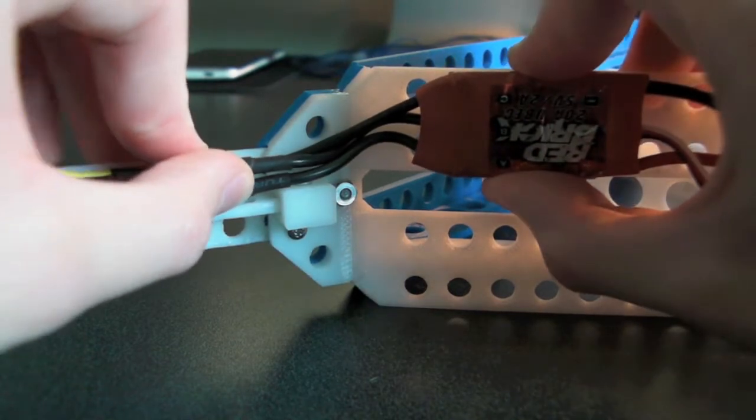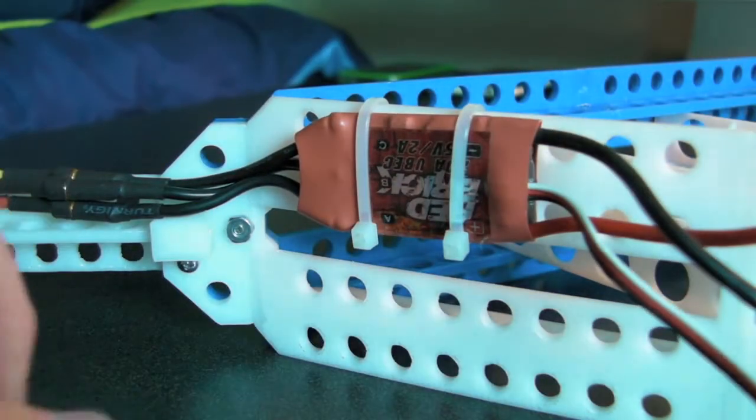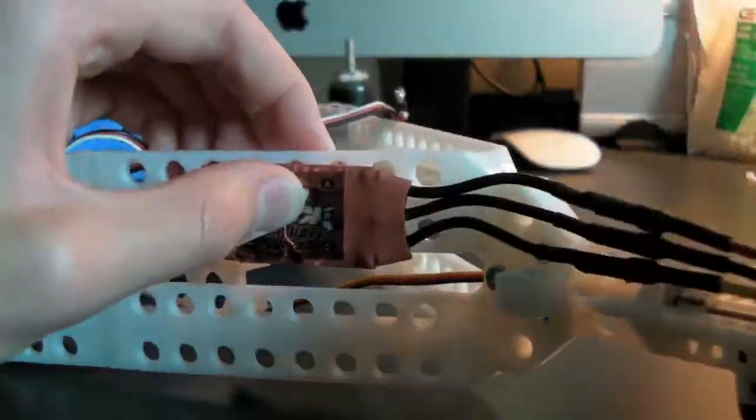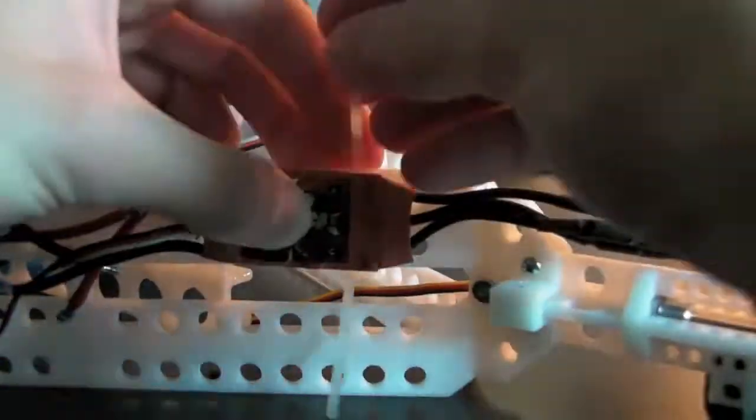After that, I zip tied the 20 amp ESCs into place. For the rear one, I had to make sure that there was enough slack in the wires for when the motor tilted back and forth.